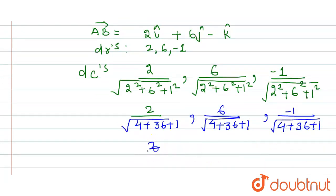2 upon square root of 41, 6 upon square root of 41, -1 upon square root of 41. So these are the direction cosines of the given line. Thank you.